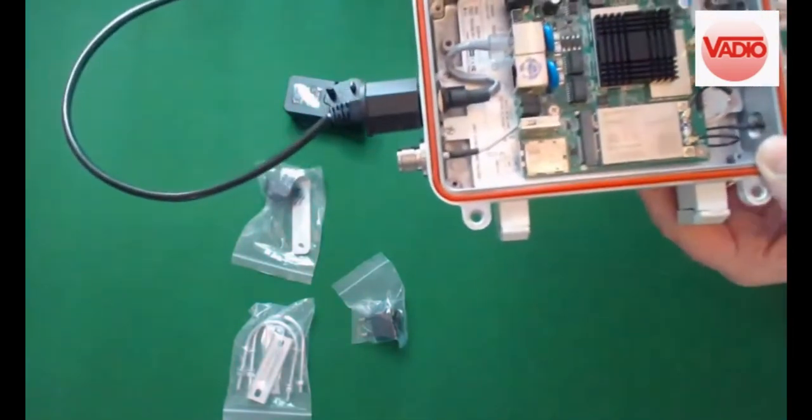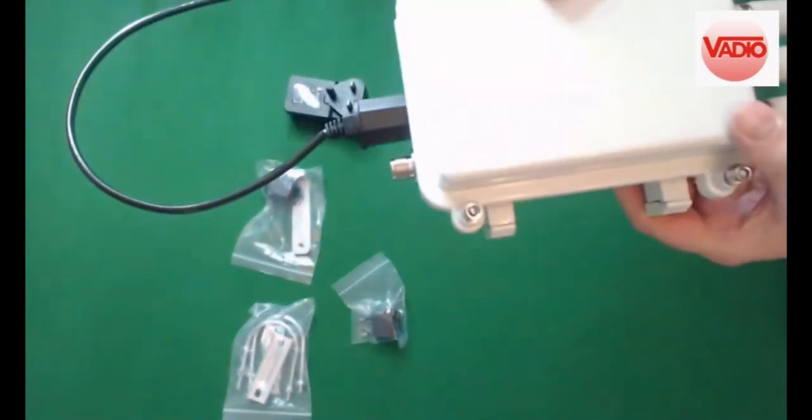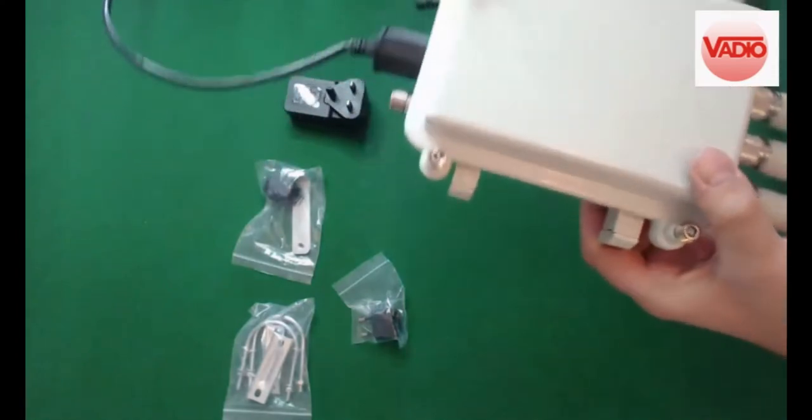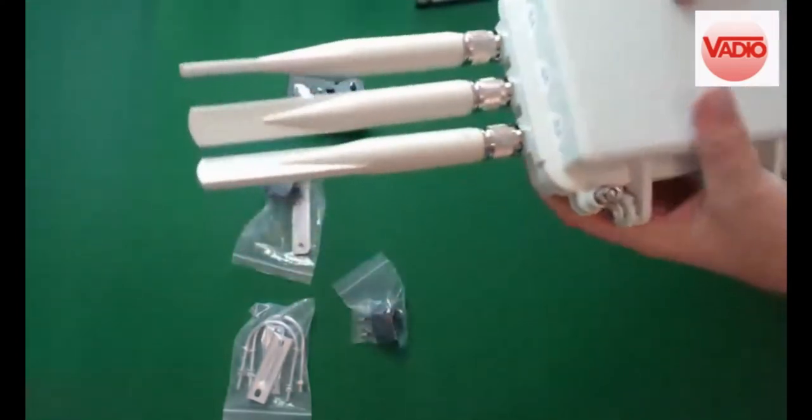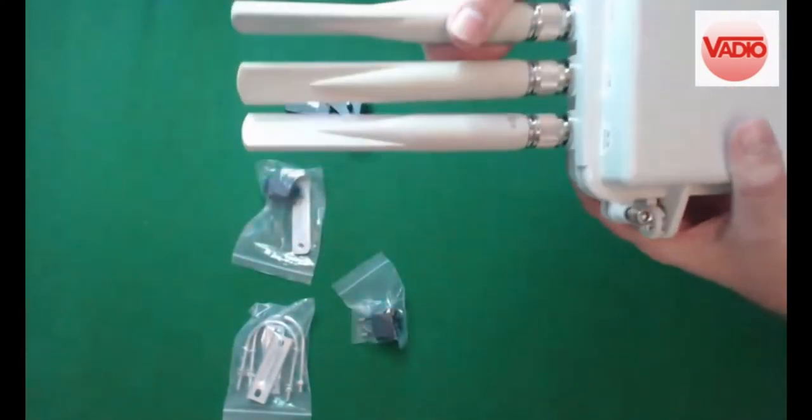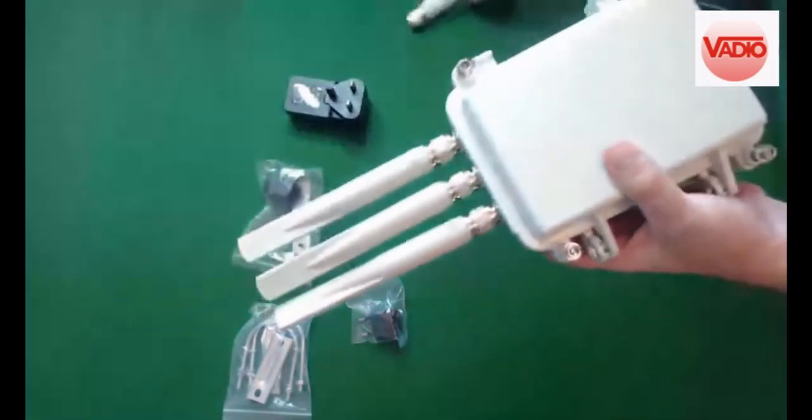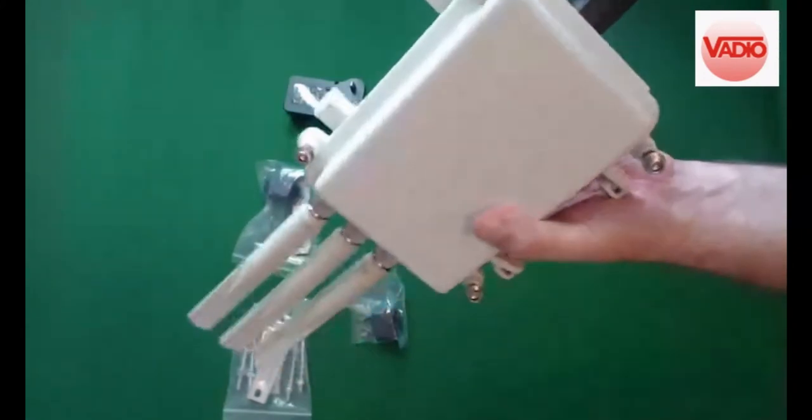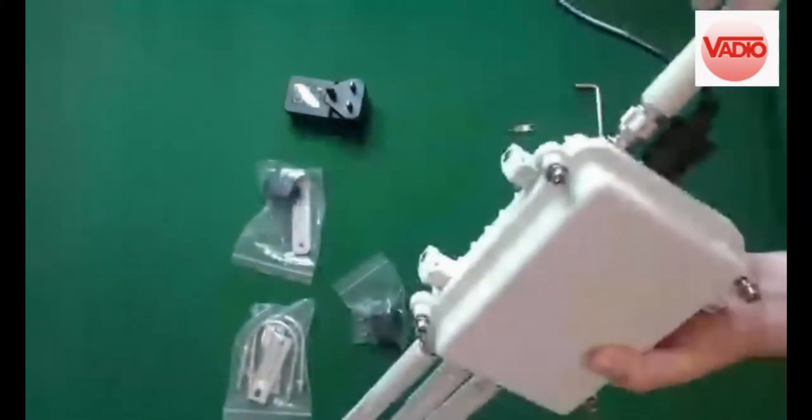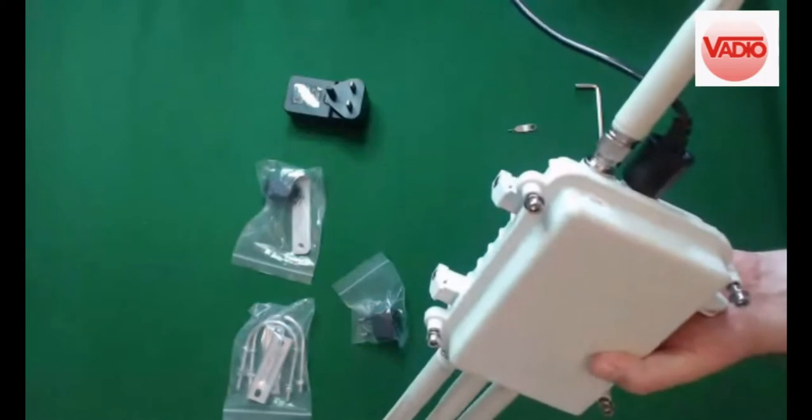So again, check your aerials. Two of the aerials, one of the middle aerials is the middle antenna, which is WiFi, and the two outside are 4G. The other side again is WiFi. Just check the aerials.